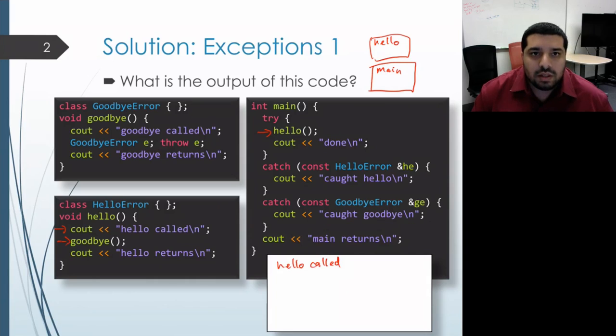Then we move on to the second line, which calls the goodbye function. We get an activation record for goodbye on our call stack. Execution enters the body of goodbye. The first thing that does is it prints out goodbye called.